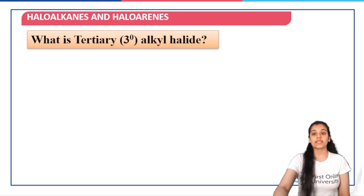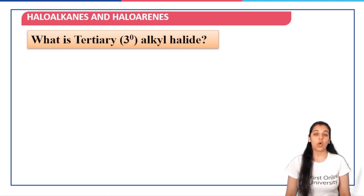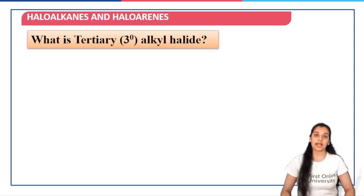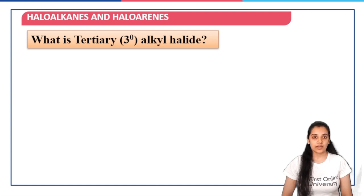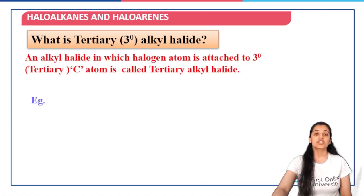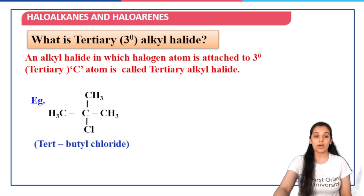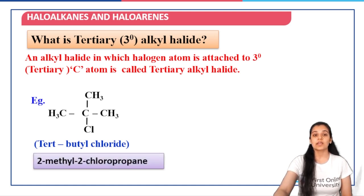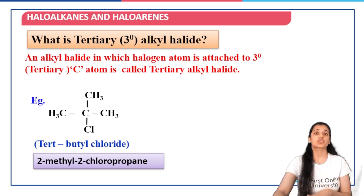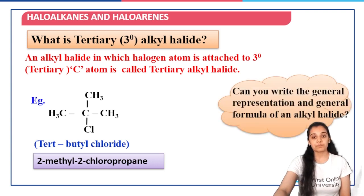The next classification of monoalkyl halides is tertiary alkyl halide. Tertiary alkyl halide means the halogen atom is attached to a carbon atom which is further attached to three other carbon atoms. For example, tertiary butyl chloride — the carbon atom to which the chlorine atom is attached is further attached to three other carbon atoms — and we call it 2-methyl-2-chloropropane.